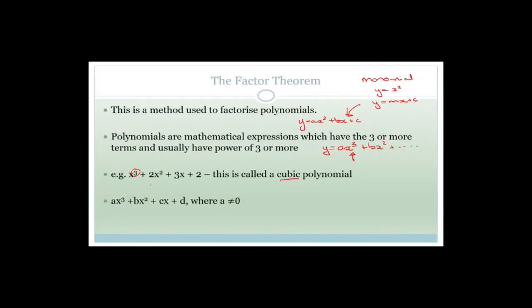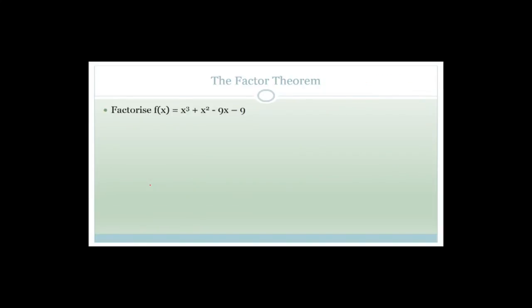Similarly, the general term for a cubic polynomial is y = ax³ + bx² + cx + c, where a cannot equal zero, otherwise it would not be a polynomial anymore - it would be back to a trinomial. So let's look at an example.